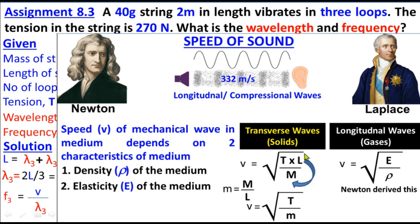This formula applies here because both length and mass are given. Sometimes length and mass are not given directly — instead, mass per unit length (small m) is given. In that case, you use small m, and rearranging gives the alternate form of the formula with mass per unit length.